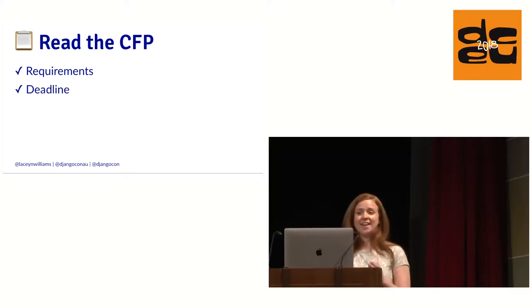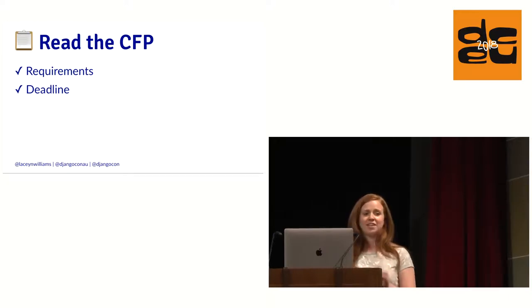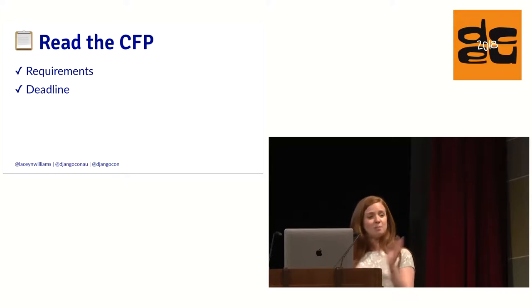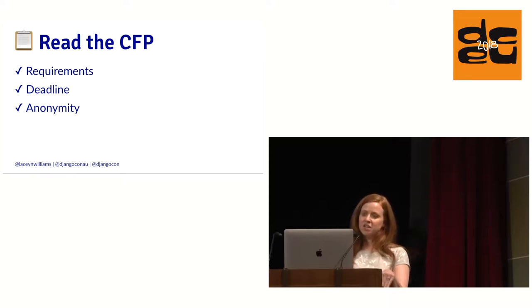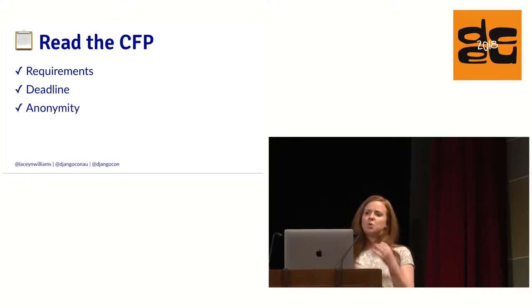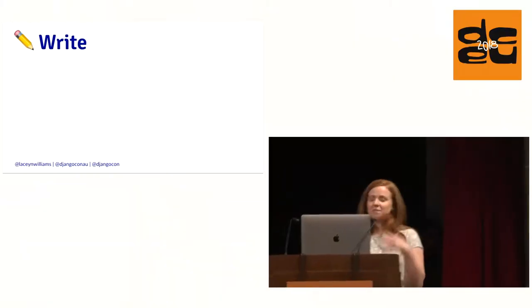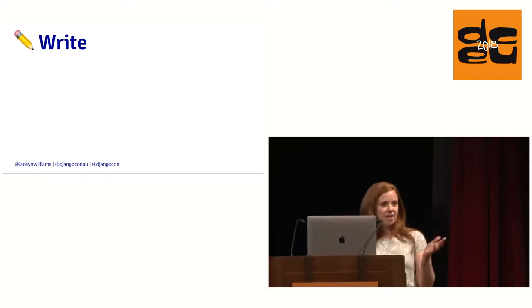CFPs all have deadlines, and it's very unfortunate as an organizer whenever someone emails saying they missed the deadline — you don't want that to be you. Pay close attention to the deadline and the time zone it's in. Also make sure you know the anonymity requirements — a lot of CFPs require anonymous submission, so you might be tempted to talk about your credentials, but make sure you're not putting identifiable information in the body of your proposal if it's an anonymous review process.